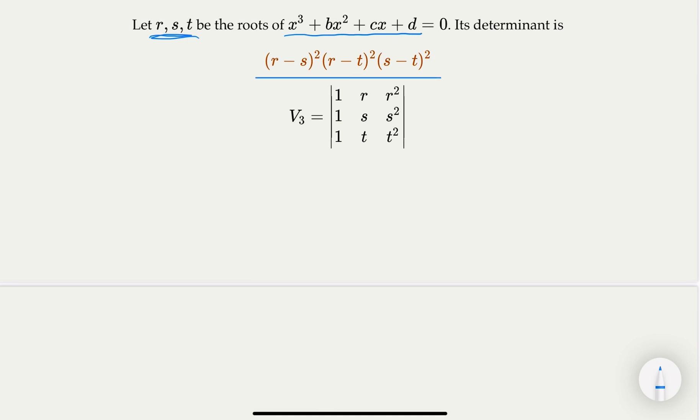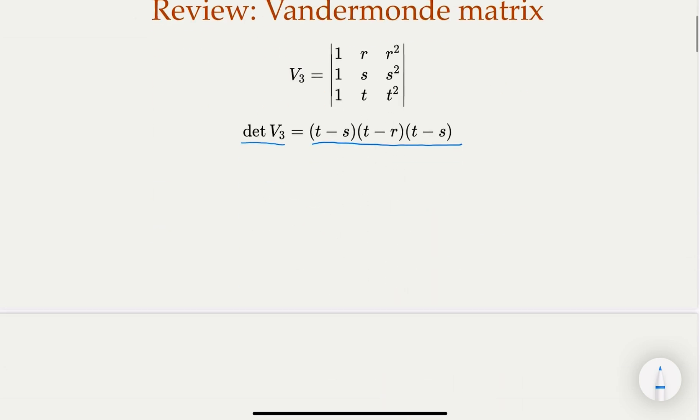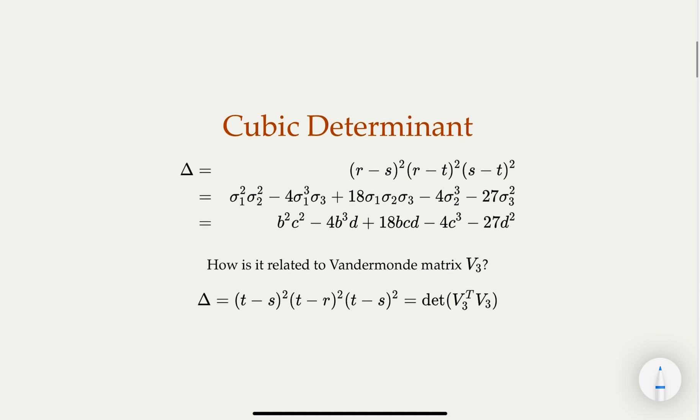This is actually a square. Notice that if we have V transpose times V, then that would be identical to the square. So we find the relationship here, right? The determinant of that matrix, which is the transpose, would be the same, so that would be squared.